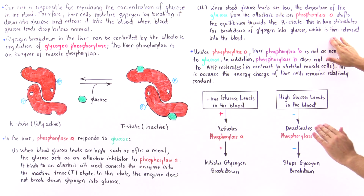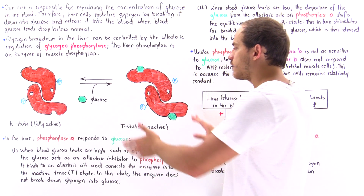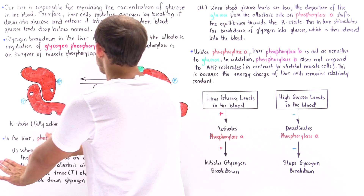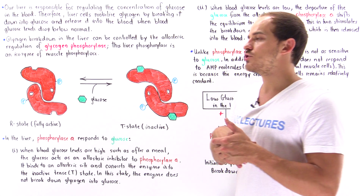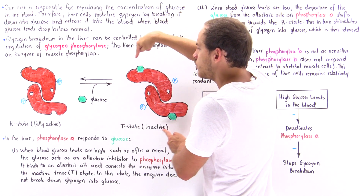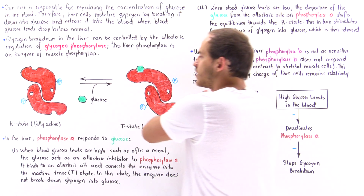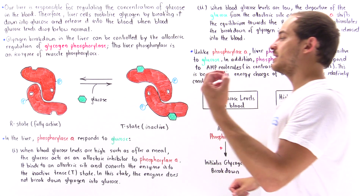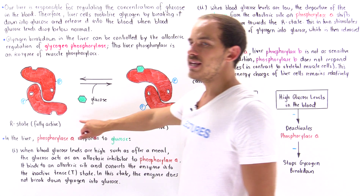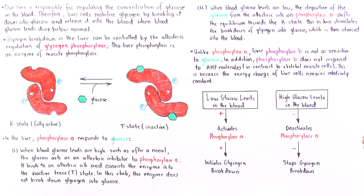When blood glucose levels are low, the glucose molecules dissociate from the regulatory sites. This triggers a conformational change that shifts the equilibrium toward the R state. In the R state, the enzyme is fully active, binds to glycogen, and begins breaking it down into glucose, which is then released into the blood plasma.